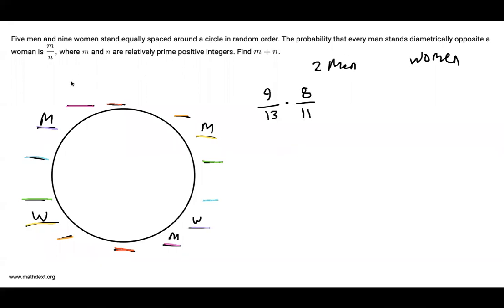And I better change this to a 7. What's the probability that a woman sits in this spot now that I have two men and seven women left? Well, it's 7 over 9 because there are seven women and nine people left.